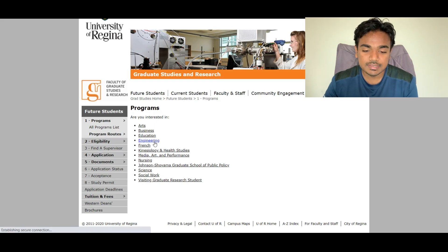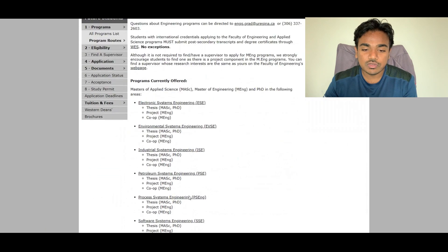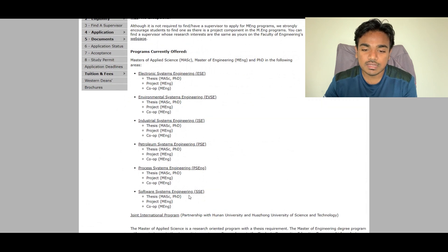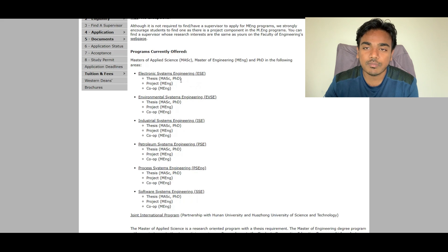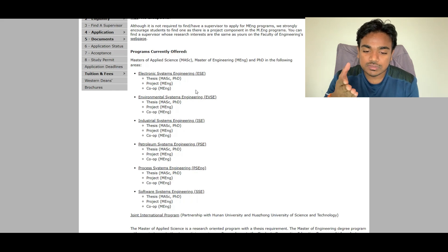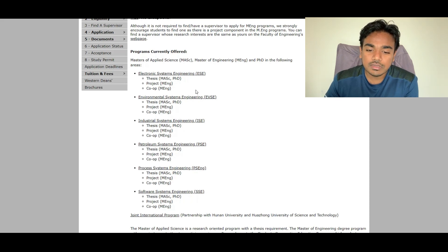Let's talk about Engineering. As you go into the Engineering program, you will see the currently offered programs at the University of Regina: Electronic System Engineering, Environmental, Industrial, Petroleum, Process, and Software System Engineering. In this program you have different routes available: Master of Applied Science, Master of Engineering, and PhD. Master of Applied Science and PhD are research programs considered under thesis. In Master of Engineering, you get two routes — Project and Co-op.